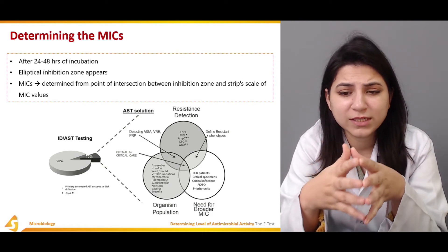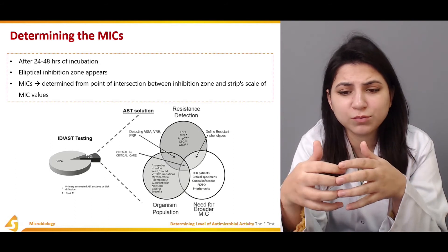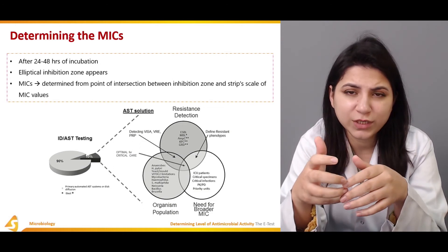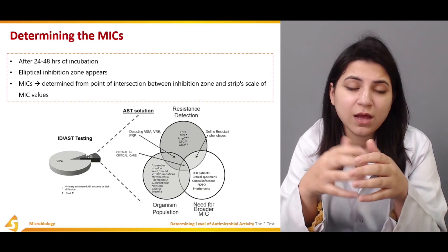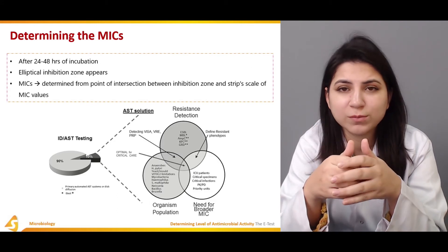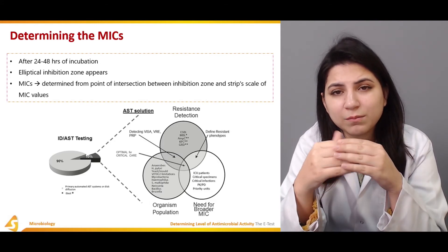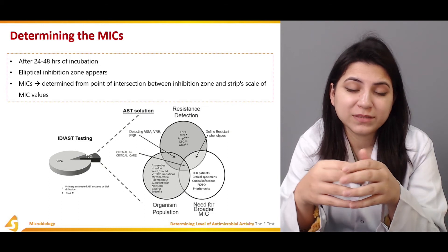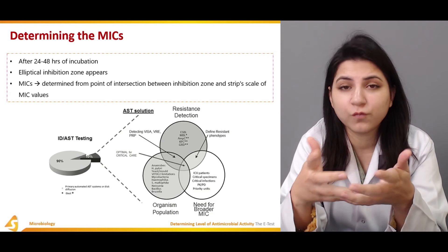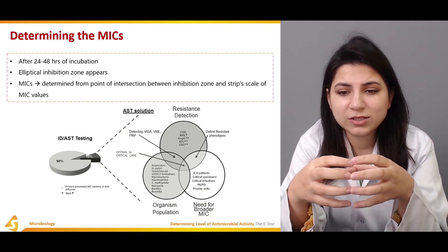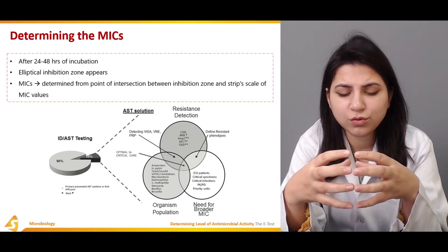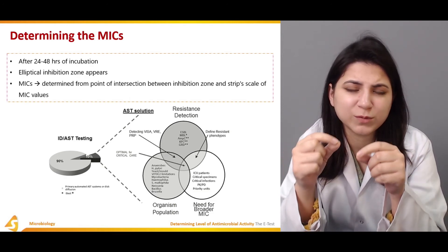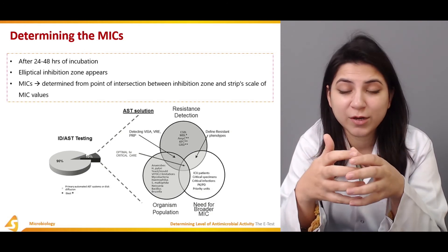There are different types of other tests commonly used, and different types of microorganism populations help us identify which type of test is ideal. Some tests also identify resistance. If no elliptical inhibition zone is formed, it means the microbe is resistant to the antimicrobial agent at every concentration, and that agent cannot be used for that microbe. The figure also shows the optimal amount of antimicrobial agents that can be used for critical care patients.